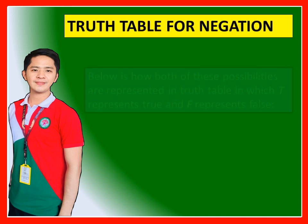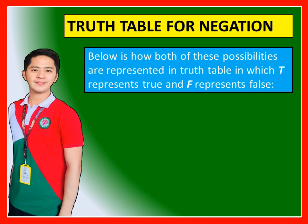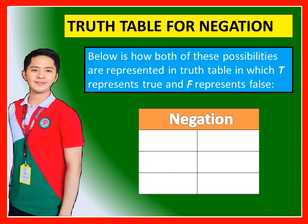Truth table for negation: Below is how both of these possibilities are represented in a truth table, in which T represents true and F represents false. There are two columns for negation: one for P and one for not P. So if your P is true, then not P is false. If your P is false, then not P is true.